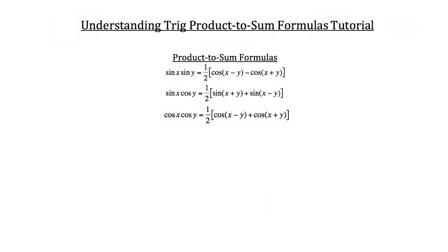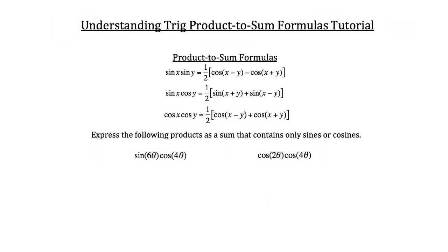If we begin with product to sum formulas, they're exactly as they sound. You're taking the product of two trig functions — so in this case sin x times sin y — and you're turning that into a sum formula. We've got product to sum formulas for sine times sine, sine times cosine, and cosine times cosine. Let me bring in a couple of examples and we'll work through how these product to sum formulas work.